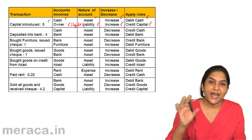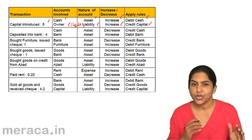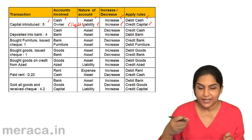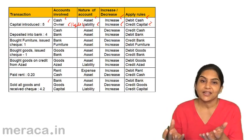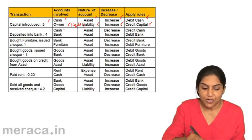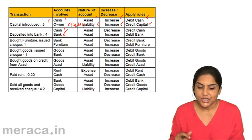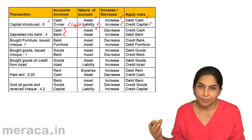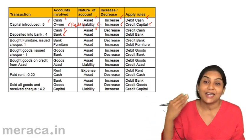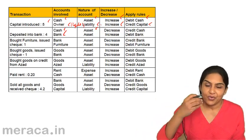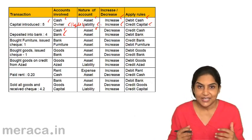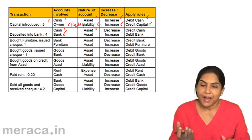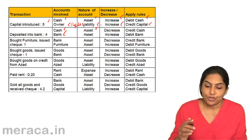Next example: deposited cash into bank. The two accounts involved are cash and bank. When you deposit cash into bank, the amount of cash comes down. We are giving this money to the bank, so tomorrow if the business needs this money, they can take it back — it is a receivable. Just like when the proprietor gave money to the business, the business had a liability; similarly, when the business gives money to the bank, the bank is an asset. Receivables are assets.